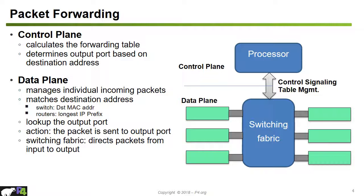There is typically an interface that connects the control plane and the data plane together. This interface is used for control signaling — the control plane installs table entries into the data plane that are then used for forwarding and lookup decisions. The control plane mostly exercises table management operations: installing new table entries, removing table entries, based on the routing protocol functionality that the switch has.